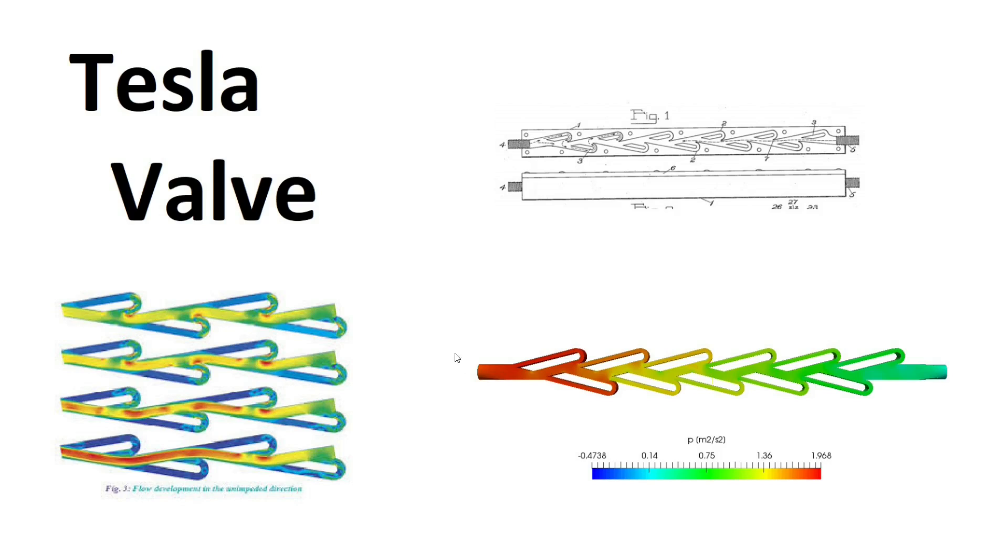So unlike a flap valve, they don't completely close all their flow. They are susceptible to leakage. So basically, the job of designing a Tesla valve is to design one which is as aerodynamic in one direction and as un-aerodynamic in the other direction as possible.